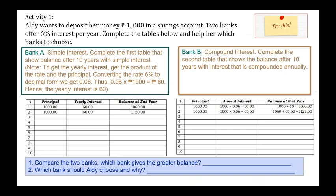Here is a sample problem — Activity 1. Aldi wants to deposit 1,000 pesos in a savings account. Two banks offer 6% interest per year. Complete the tables below and help her decide which bank to choose. For Bank A — simple interest — complete the table showing the balance after 10 years. To get the yearly interest, multiply the rate by the principal: 6% = 0.06, and 0.06 × 1,000 = 60. So the yearly interest is 60 pesos.